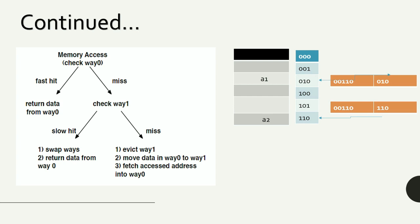Here is how a column associative cache behaves when it accesses data. Way one is the address indexed into a particular cache block. If there is a hit, the data present there is sent to the processor. If there is a miss, way two is checked by applying the hash function to the higher-order bit of the index, which flips it to one, mapping to another cache block.